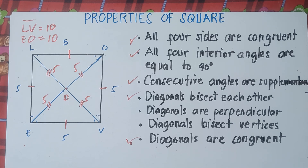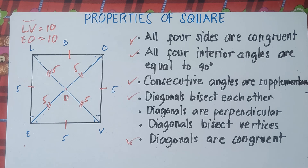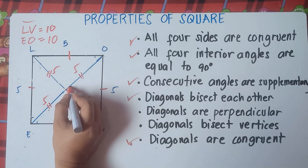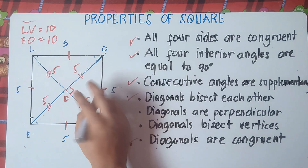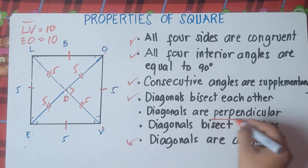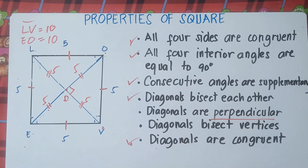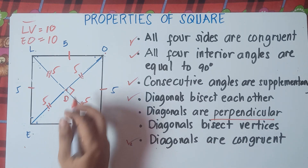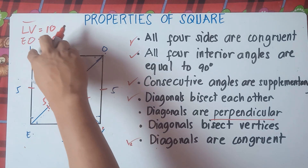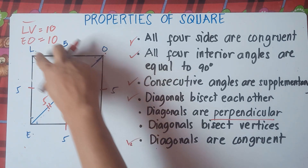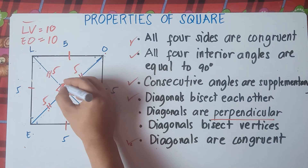Diagonals are perpendicular. Perpendicular means that when the diagonals bisect each other, they form a 90-degree right angle. So angle ODV is 90 degrees, angle EDV is also 90 degrees, angle LDE is 90 degrees, and angle LDO is also 90 degrees.